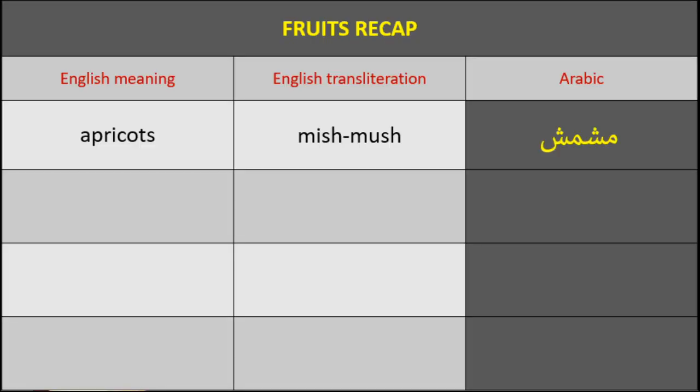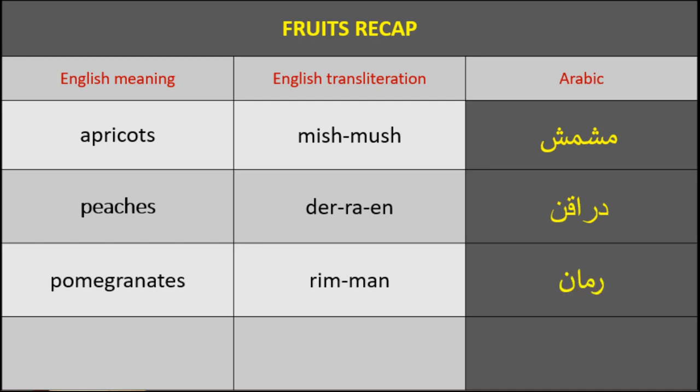Now I will repeat all the fruits we have learned. Apricots — مش-mush. مش-mush. Peaches — درّائن. درّائن. Pomegranates — رمّان. رمّان. Pineapples — ananas. Ananas.